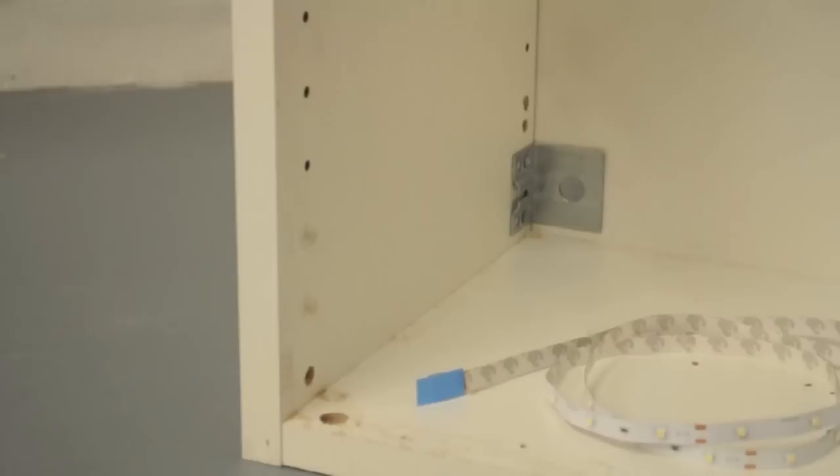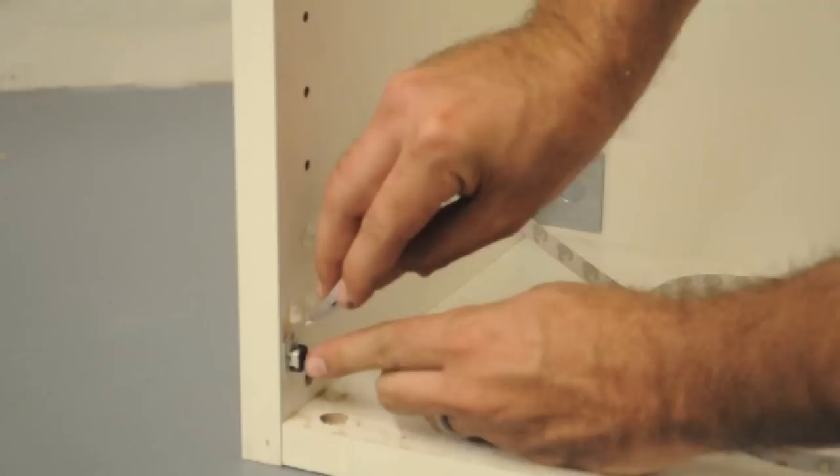Peel the adhesive from the flexible LED strip and begin to work your way around the front perimeter of the cabinet box. Stay as close to the front edge as possible.